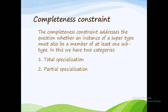The second constraint is completeness constraint. It addresses the question whether an instance of a supertype must also be a member of at least one subtype. In completeness constraint, the entity instance must and should be a member of at least one subtype.